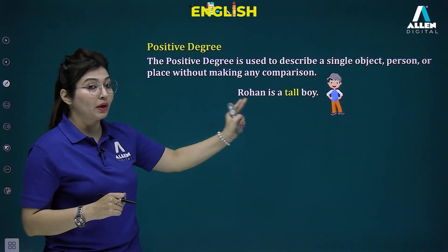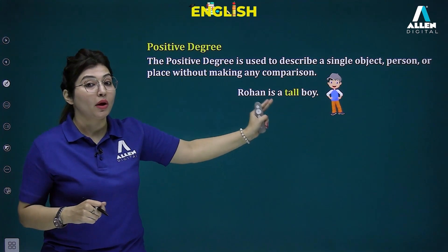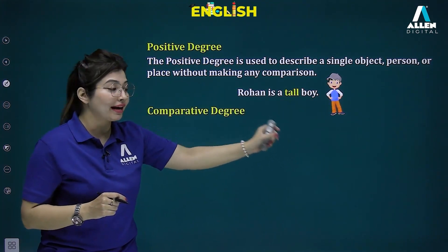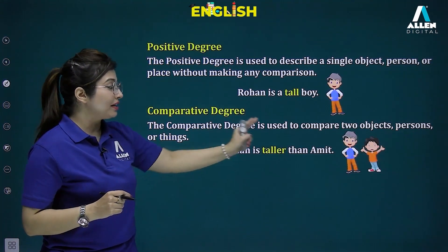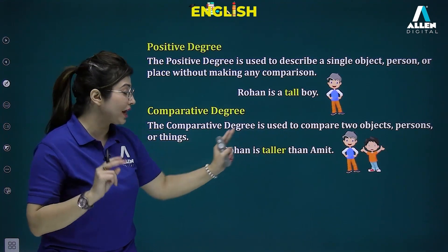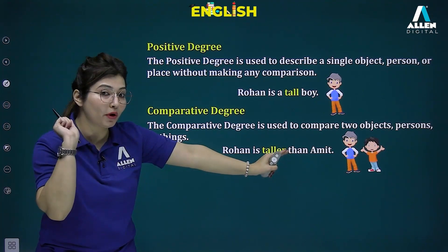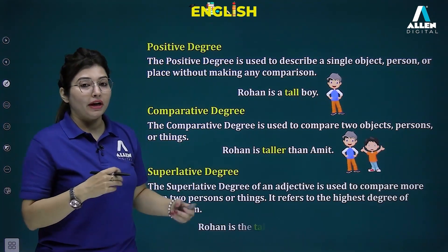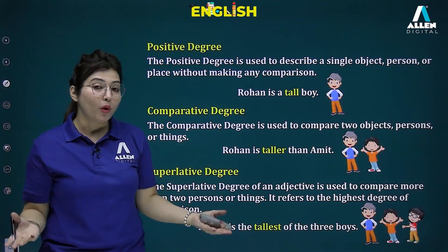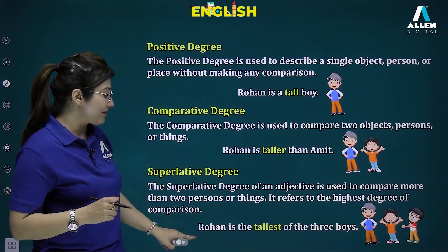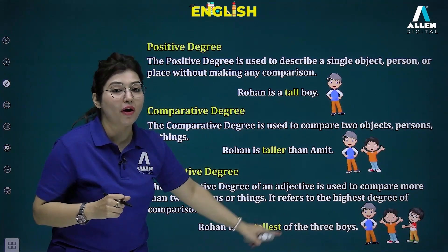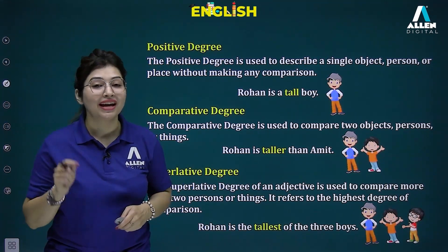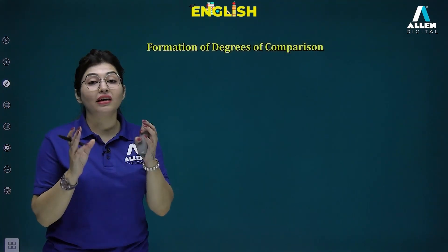In the positive degree there is no comparison — for example, 'Rohan is a tall boy.' The comparative degree compares two objects: 'Rohan is taller than Amir.' The superlative degree compares among more than two: 'Rohan is the tallest of the three boys.'